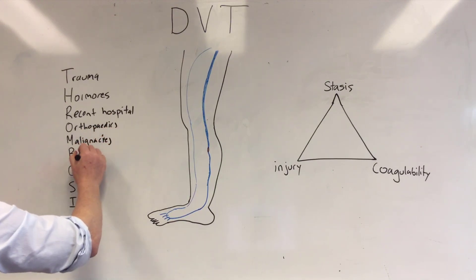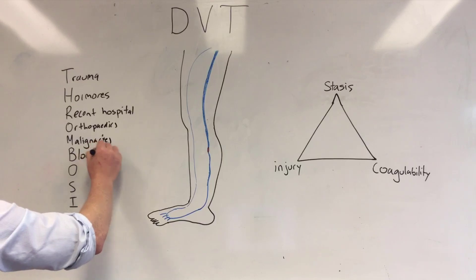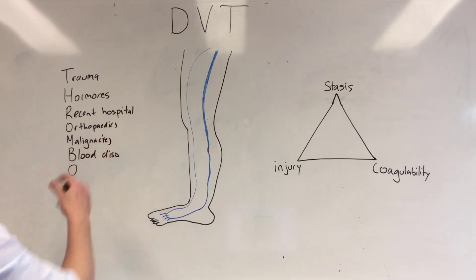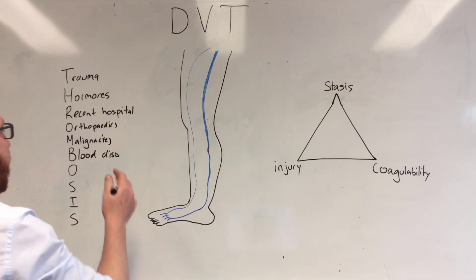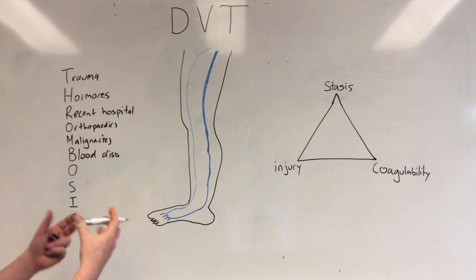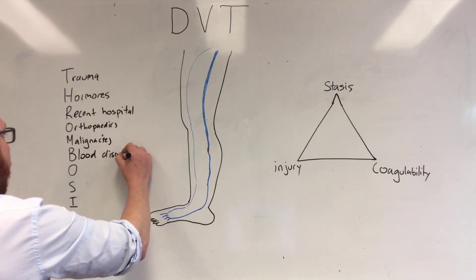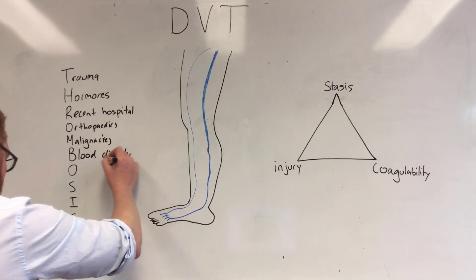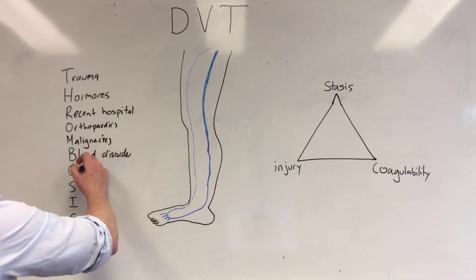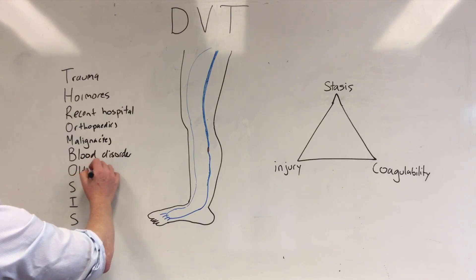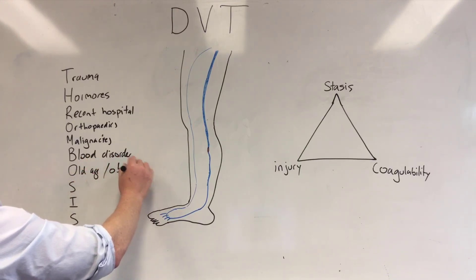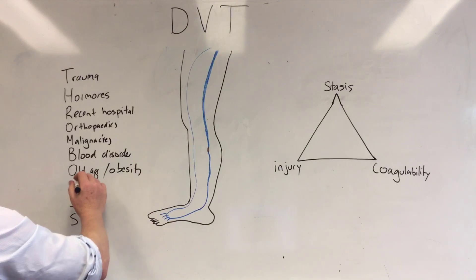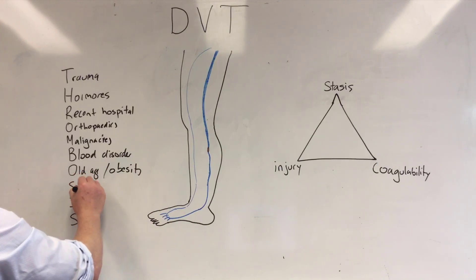B is for blood disorders — things that are more likely to put you into a clotting state or cause thicker blood, like polycythemia. O is for old age, and we could also include obesity. S is for surgery.